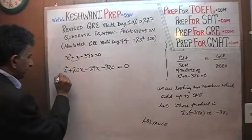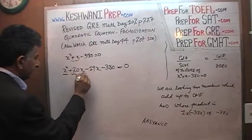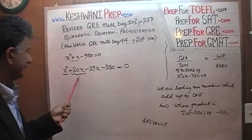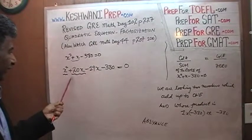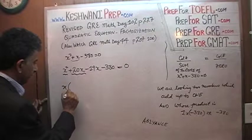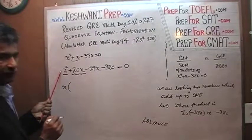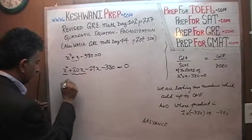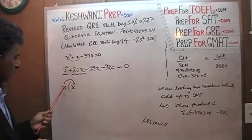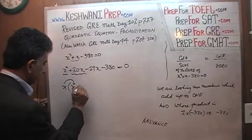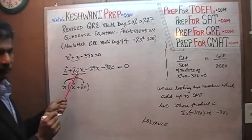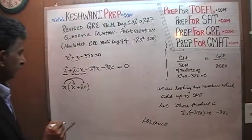Now we look at the first two terms: x squared and 20x. Is there anything common between them? Yes — x is the common factor. We take out x. What's left is x from x squared, and 20 from 20x. So we have x times (x plus 20). Verify: x times x gives x squared, and x times 20 gives 20x — correct.